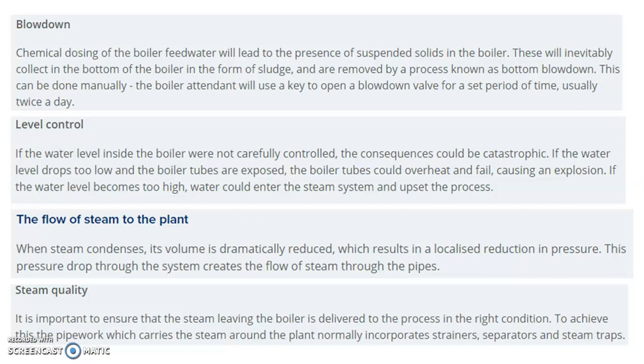Next is steam quality. It is important to ensure that the steam leaving the boiler is delivered to the process in the right condition. To achieve this, the pipework which carries the steam around the plant normally incorporates strainers, separators, and steam traps. These devices — strainers, separators, and steam traps — are used to increase the steam quality.